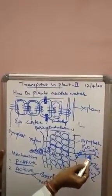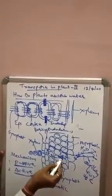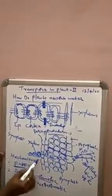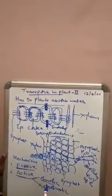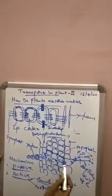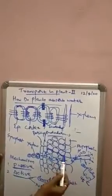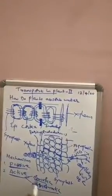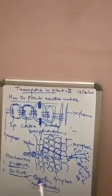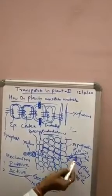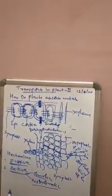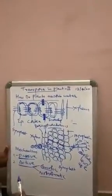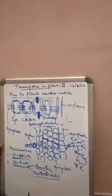Water enters from the soil to the root hair and from the root hair to outer cortical cells, inner cortical cells, and finally reaches the xylem along the osmotic potential concentration gradient. Here there is no expenditure of energy. In non-osmotic water absorption, there is expenditure of energy because water has to be absorbed against the concentration gradient. These are the two mechanisms in plants, but mainly by passive water absorption there will be bulk amount of water absorption.